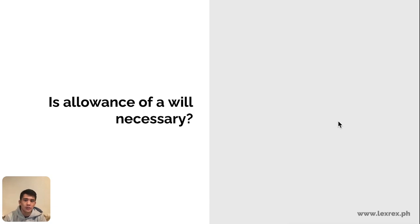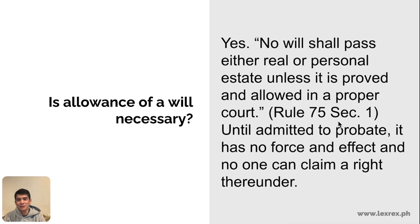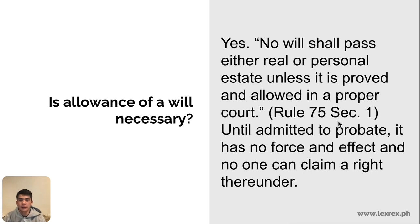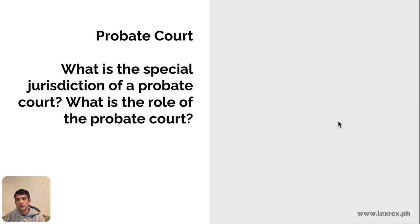Is allowance of a will necessary? Yes. Under Rule 75, Section 1, if a will is not proved and allowed in a proper court — that is, if it is not probated — it will not pass any real or personal property. If there is no will, the heirs can settle among themselves and decide on the division. But if there is a will, it must be proven by a probate court; until admitted to probate it has no force and effect, and no one can claim a right under it.